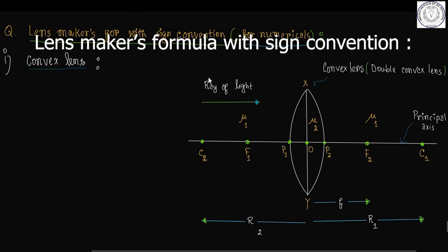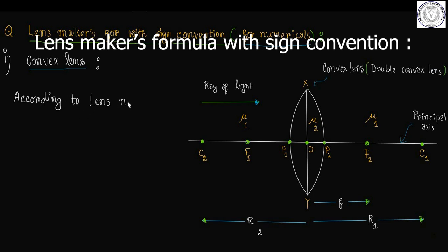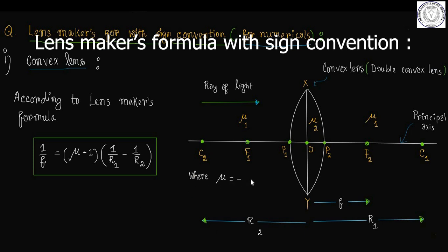This is an incident ray of light traveling towards the right. Small f is the focal length of the convex lens, which is the distance of the second principal focus F2 from the optical center O. According to the Lensmaker's formula, 1 by f equals mu minus 1 into 1 by R1 minus 1 by R2.